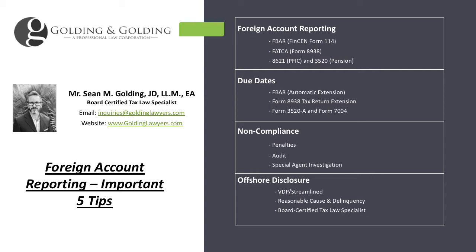Some of the common types of forms are the FBAR — Foreign Bank and Financial Account reporting, FinCEN Form 114. This one is not even a tax form; it's a form that the IRS enforces but it's technically a FinCEN form. FinCEN is the Financial Crimes Enforcement Network.